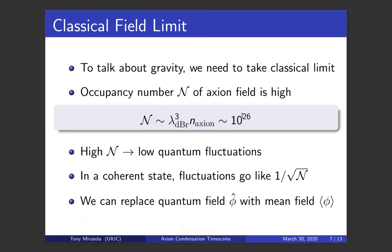We can do this because the occupancy number of the axion field, the particle number, is extremely high. To estimate this, we can look at the density of the axions and multiply it by the cube of the de Broglie wavelength to get an estimate for the occupancy number. We get something like 10^26, which is the occupancy number we would expect currently in the universe inside of mini clusters. This number would be even higher in the initial conditions because when the mini clusters are first formed, the de Broglie wavelength is longer.